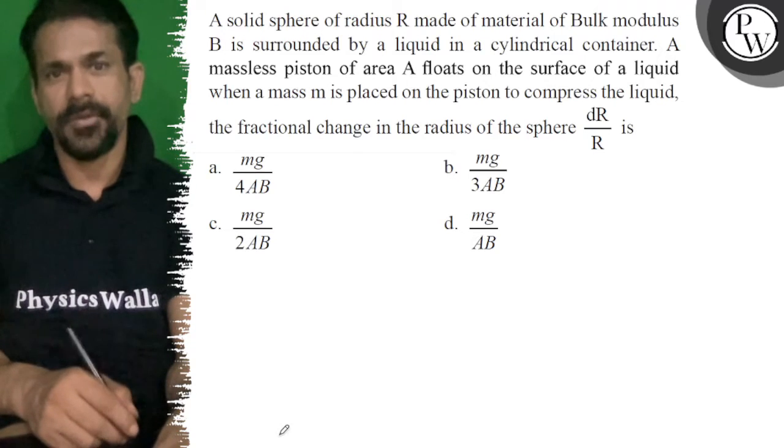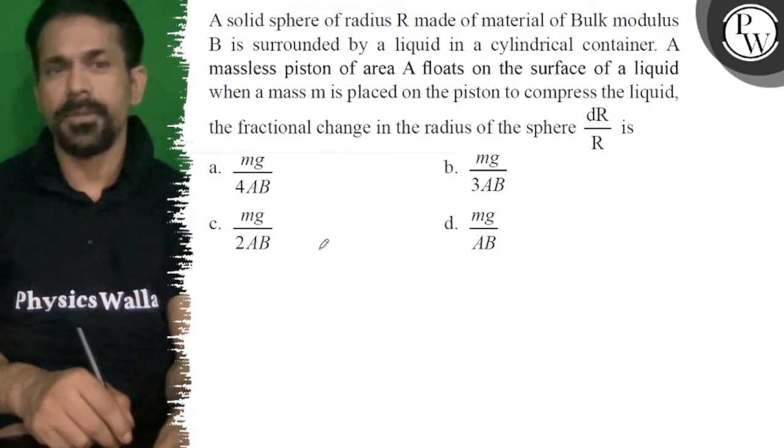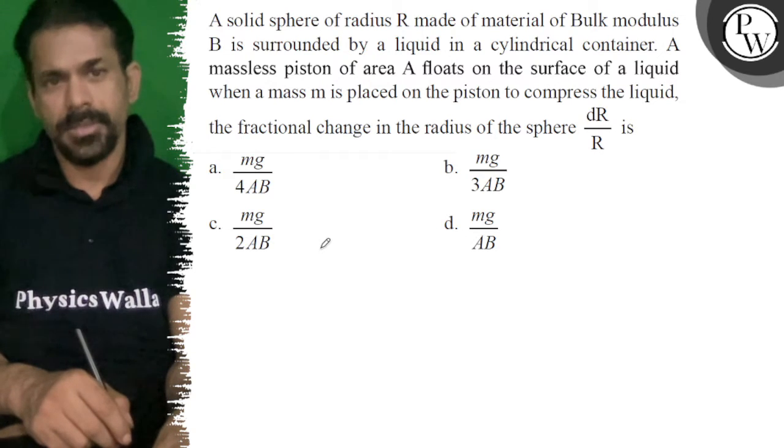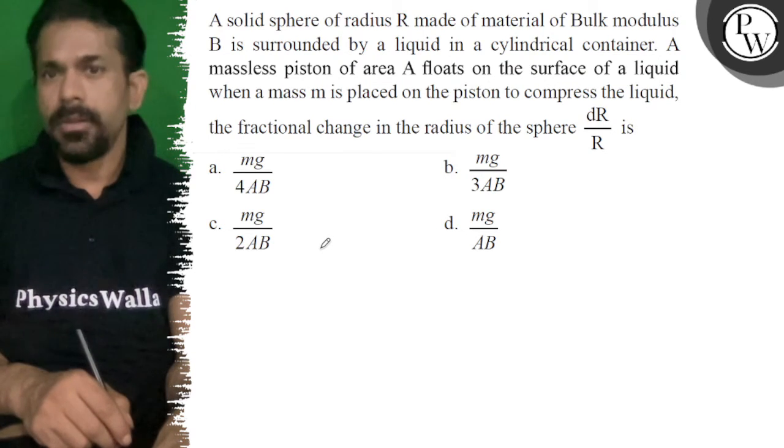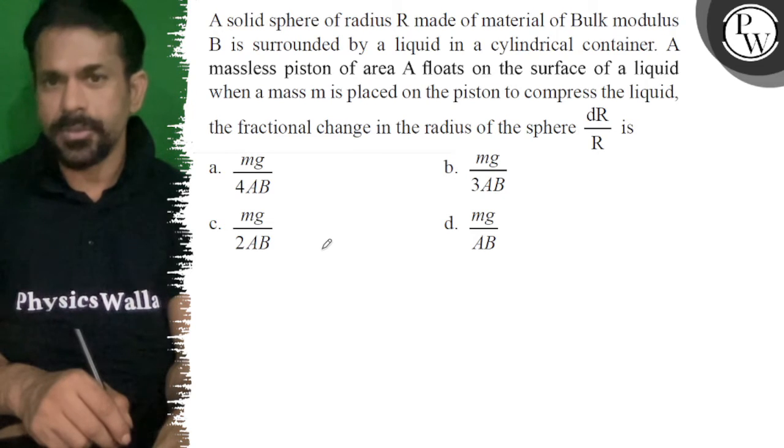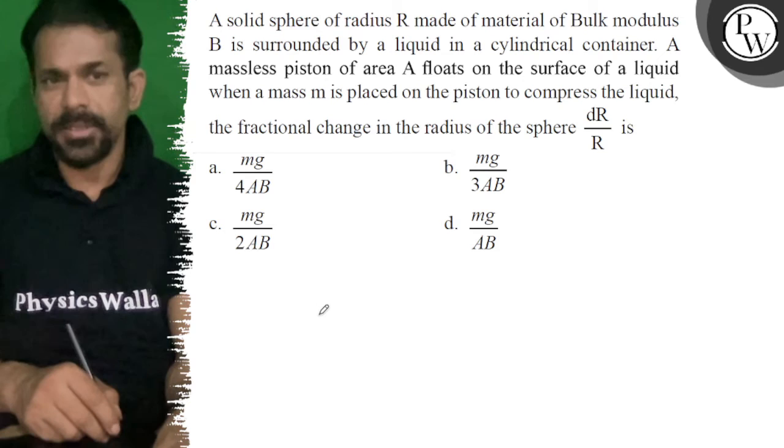Hello, let's see the question. A solid sphere of radius R made of material of bulk modulus B is surrounded by liquid in a cylindrical container. A massless piston of area A floats on the surface of liquid. When mass M is placed on the piston, it compresses the liquid.